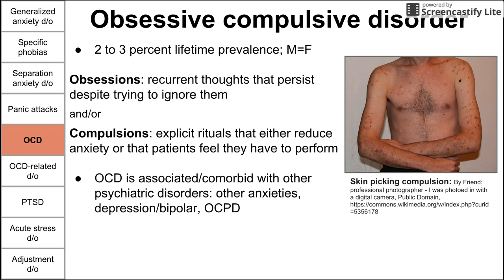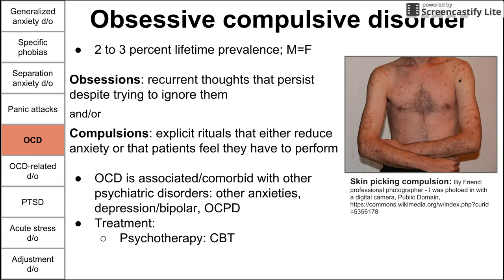A quick note on differentiating OCD from obsessive-compulsive personality disorder (OCPD): OCD is egodystonic, while OCPD is egosyntonic. Egosyntonic means it feels acceptable to you — that's OCPD. OCD is egodystonic — you don't feel good about it. You don't want to wash your hands 20 times in a row or check the locks 50 times before leaving the house. These things disturb daily life.